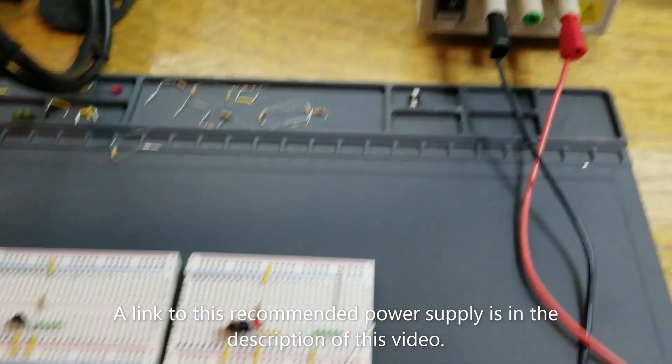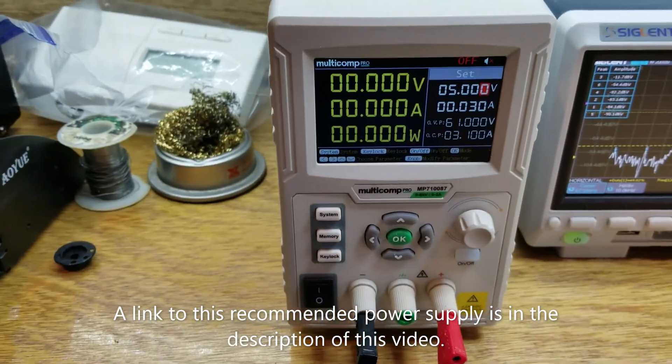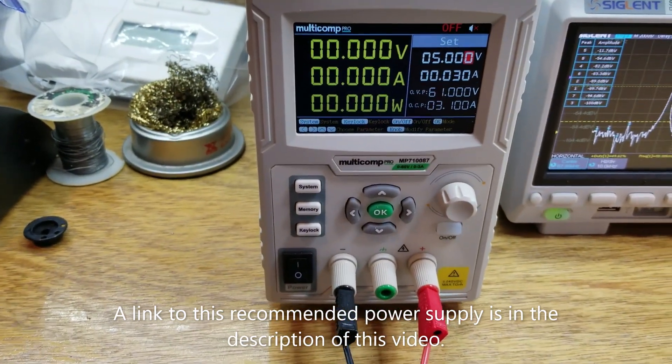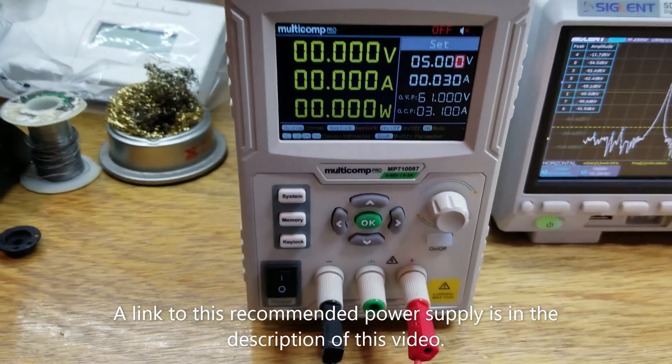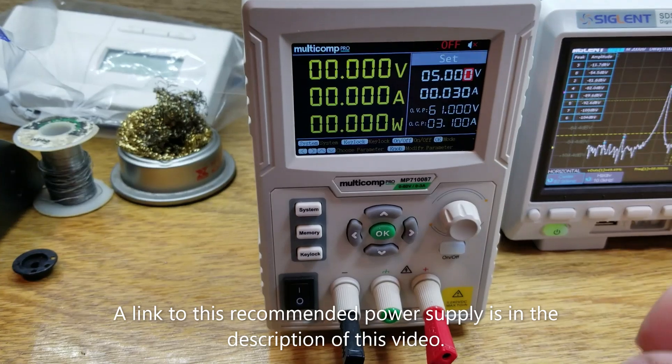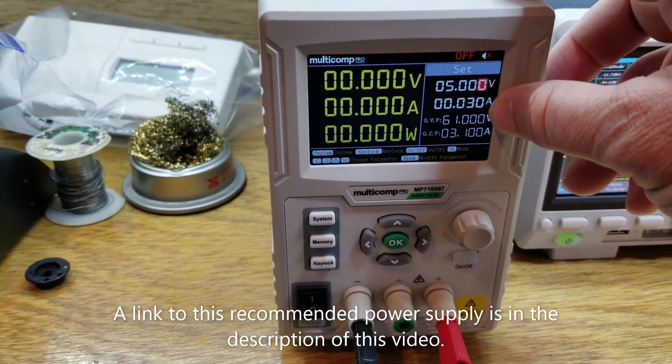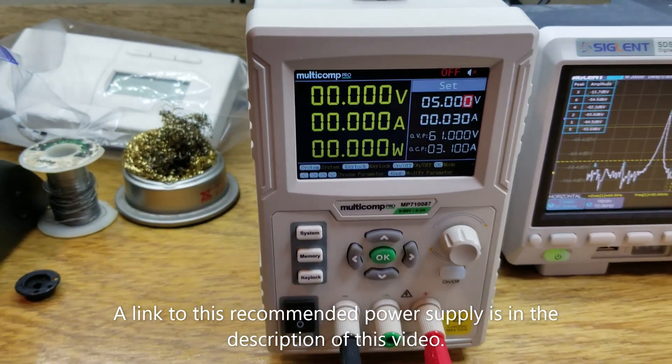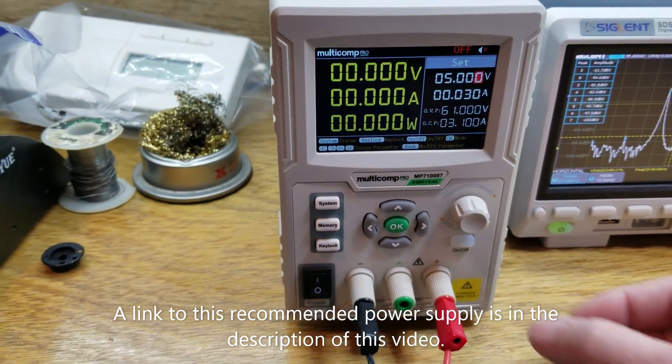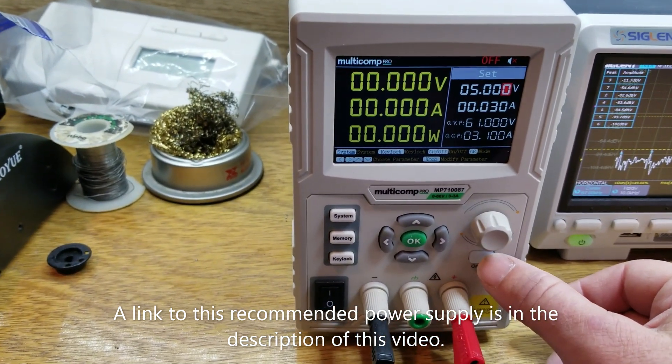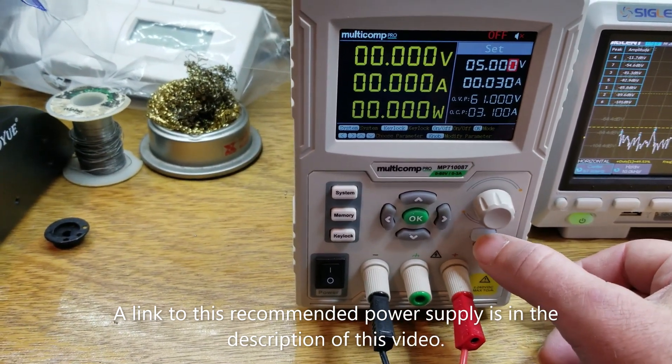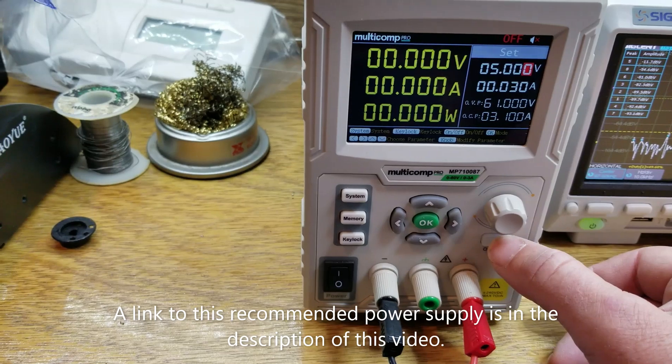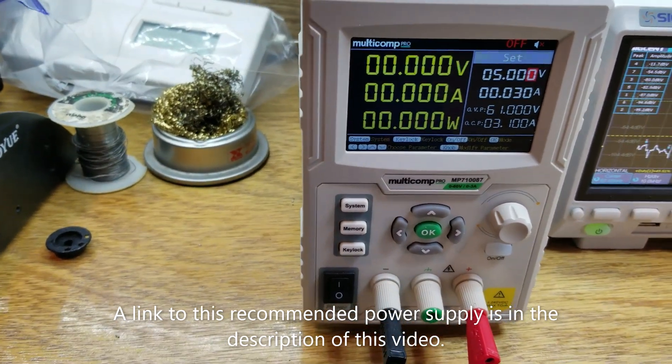I do actually recommend this power supply right here. This is a great low cost programmable power supply that has a resolution, a set and display resolution, of one millivolt and down to one milliamp. It's a 61 volt supply, maximum three amps, and allows you to toggle the output on and off so that when you're working on circuits you can make changes to that circuit with impunity and switch it back on when you're done.